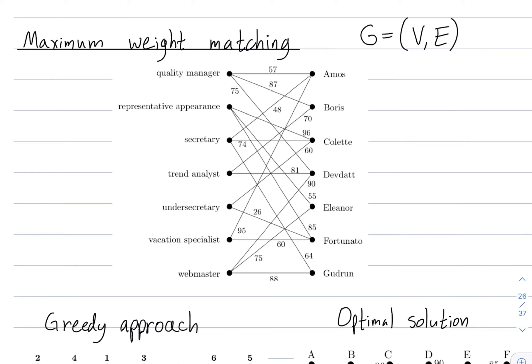In this particular example, the vertices on the right are people. Very impersonally, I'll refer to them as person A, B, C, D, etc. And then the vertices on the left are different roles that they could fill in our company. Quality manager, secretary, trend analyst, etc.